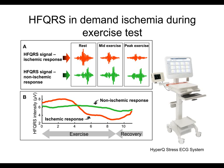HFQRS can also be used during demand ischemia. By monitoring and analyzing the HFQRS during the stress phase of an exercise test, the evolution of ischemia can be detected with better accuracy compared to ST changes. In a normal subject, we expect to find a uniform level of HFQRS, but in a patient with coronary artery disease, demand ischemia will develop during the exercise, resulting in a significant reduction of the HFQRS amplitude.